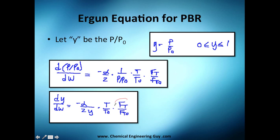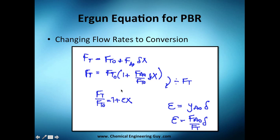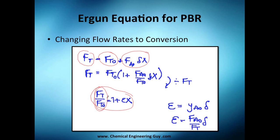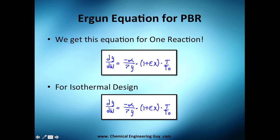The total molar flow rate FT changes with epsilon. At any point, FT equals the initial FT plus the change in FT. Substituting this into the equation gives an expression that includes the volumetric expansion term, accounting for change in volume, and the temperature term. The pressure drop term is also here. For isothermal design, the temperature term drops out, giving us our final working equation.